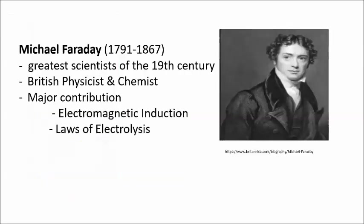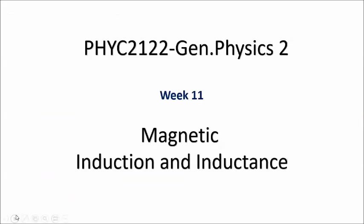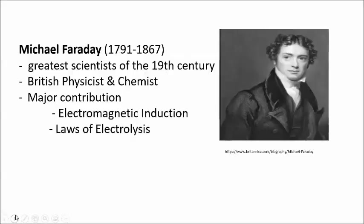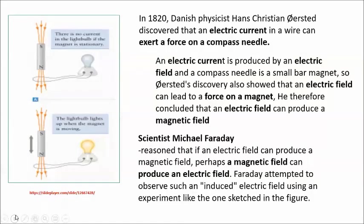In 1820, Danish physicist Hans Christian Oersted discovered that an electric current in a wire can exert a force on a compass needle, as discussed in our last meeting. An electric current is produced by an electric field, and a compass needle is a small bar magnet. Oersted's discovery showed that an electric field can lead to a force on a magnet, and he therefore concluded that an electric field can produce a magnetic field.